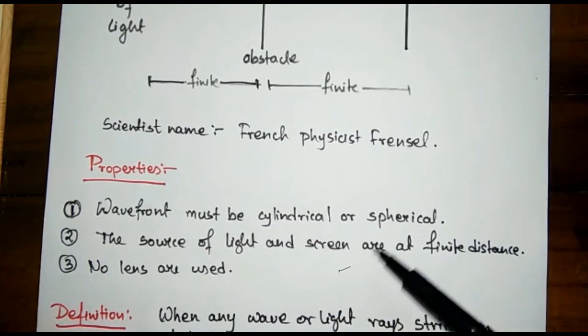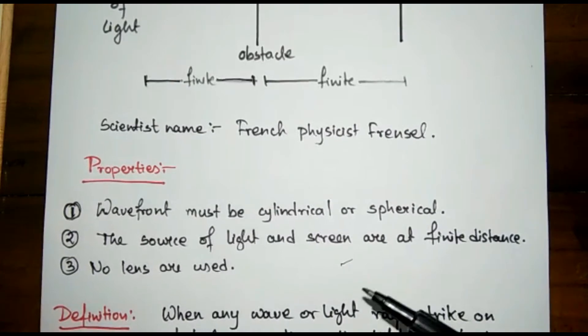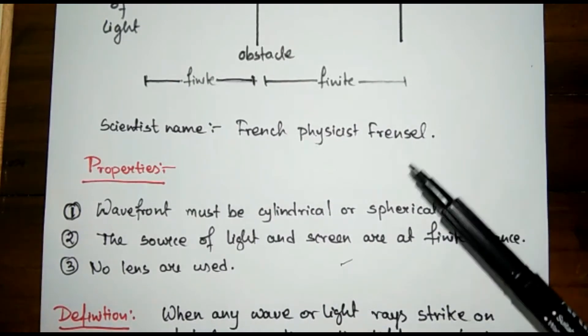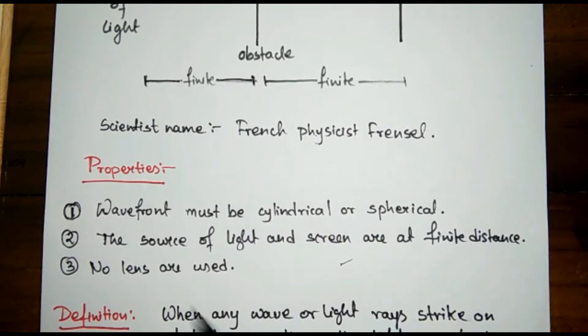Now let's see the properties for Frenel diffraction, or you might say the conditions required to occur the phenomena of Frenel diffraction. The first point is wavefront must be cylindrical or spherical, and the source of light and screen are at finite distance.